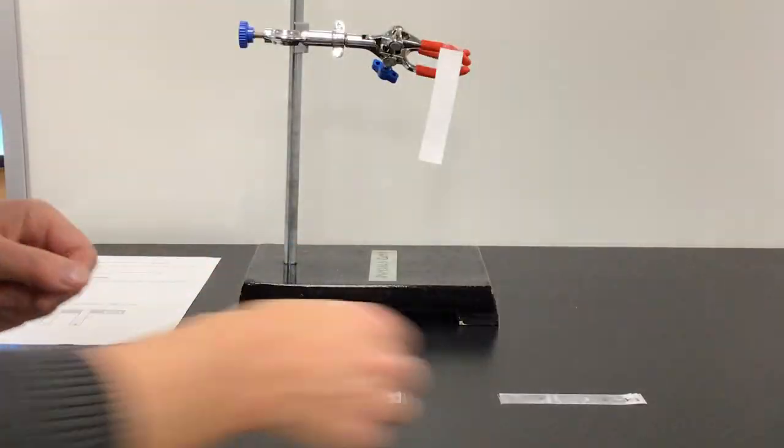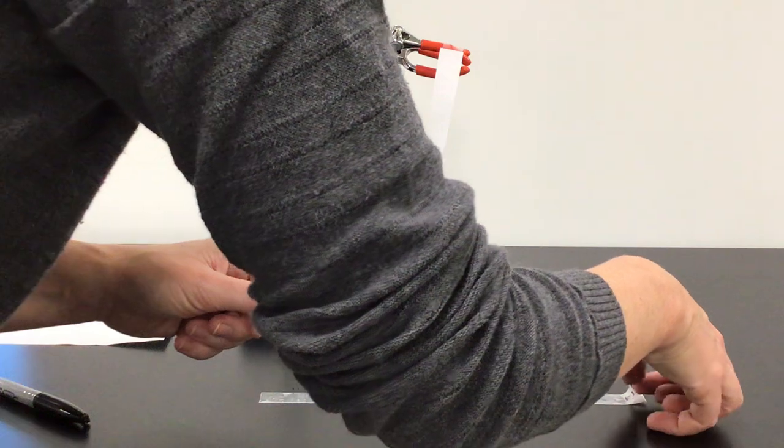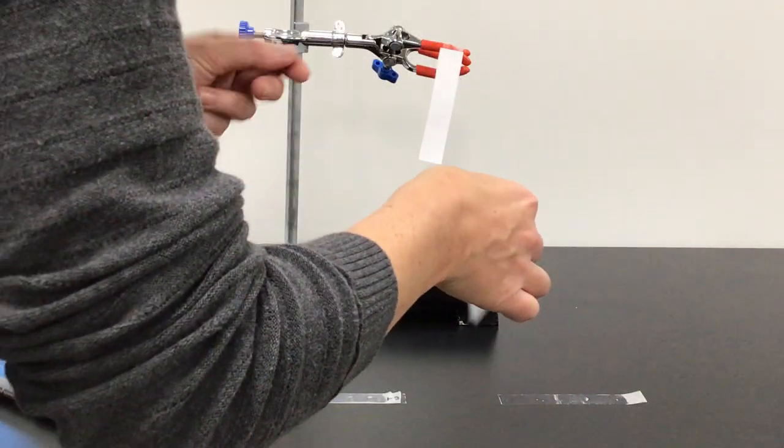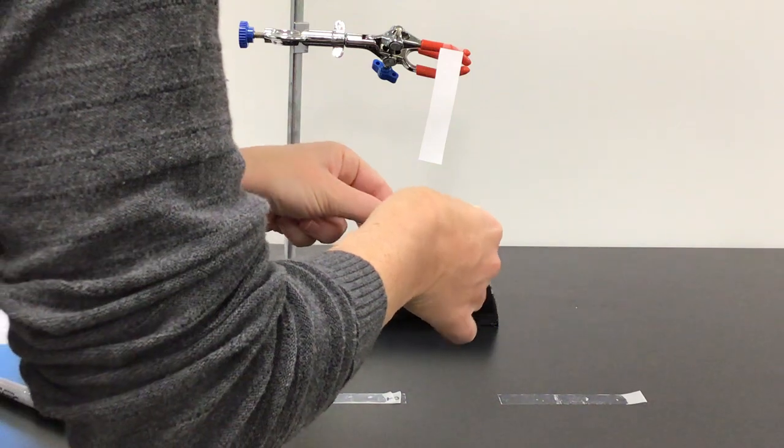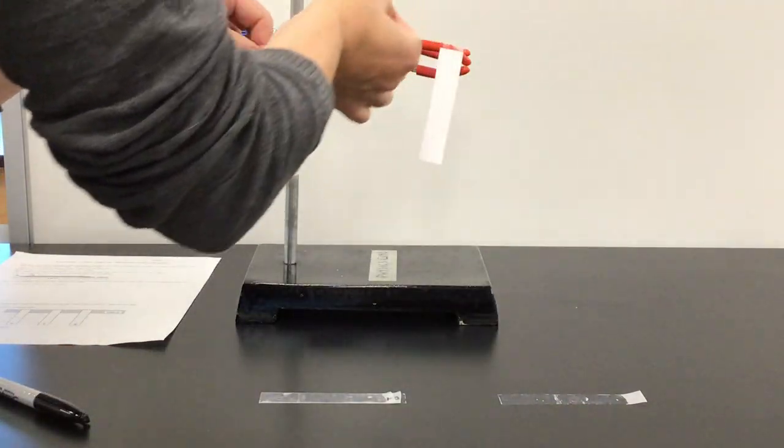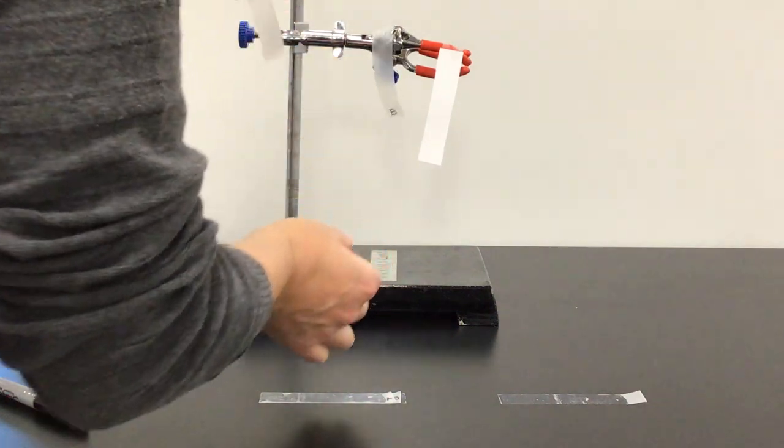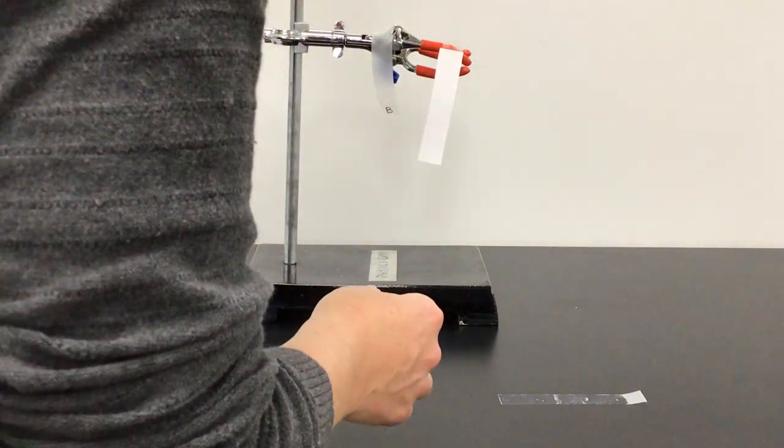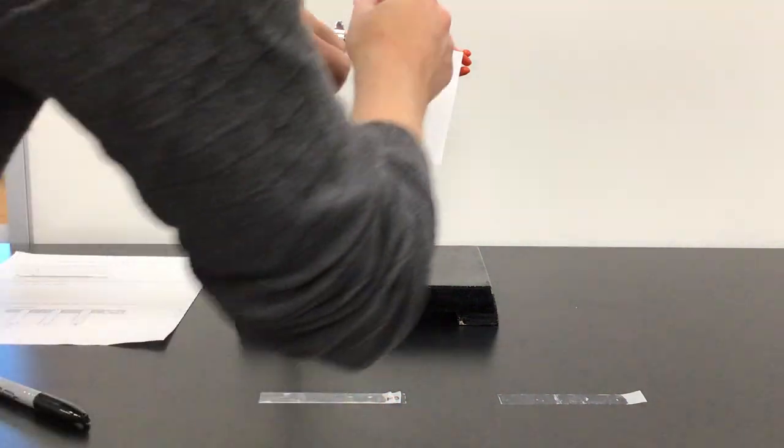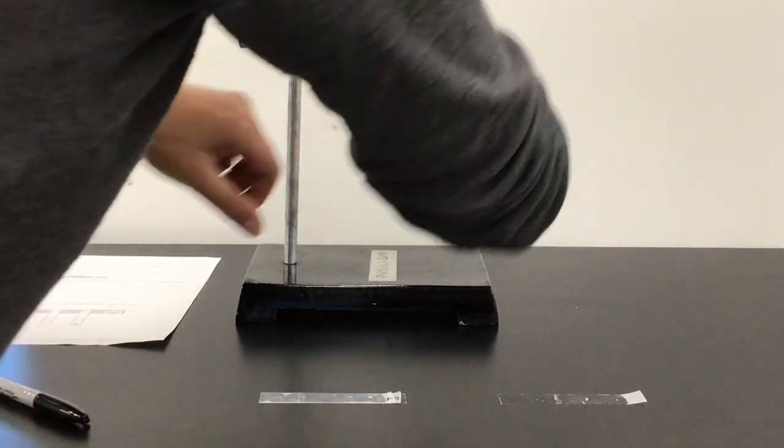Okay, so I've got my two pieces of tape. I'm going to pull them off the table, then I'm going to pull them apart. I'm going to stick one there. Oh, it really wants to attract. Did you see that? I'm going to stick one there.